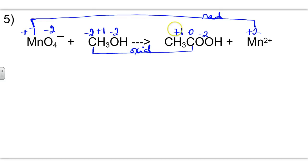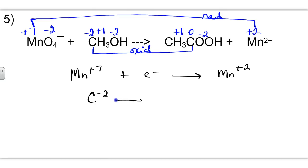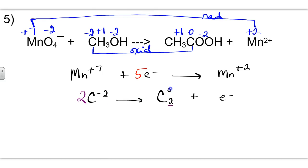For the half-reactions: plus seven is the higher state, so Mn⁺⁷ plus electrons yields Mn⁺². The electrons go on the left with the plus seven. Between negative two and zero, electrons go on the right: C⁻² yields C₂⁰ plus electrons — we use a subscript of two because we are dealing with two carbons in this compound, so we also need a two on the left. Total electron transfer from plus seven to plus two is five electrons. From negative two to zero is two electrons per carbon; two times two carbons gives four electrons total.